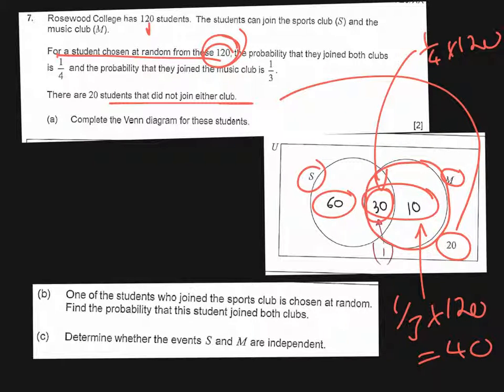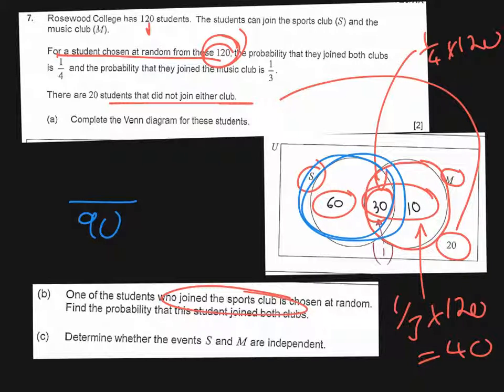In part B it says one of the students who joined the sports club is chosen at random and we're asked to find the probability that the student joined both clubs. So the key thing here is we are only looking at students who joined the sports club. So the first thing you want to figure out is how many students you have got in the sports club. So that's everyone that's inside here. So there are 90 people in the sports club.